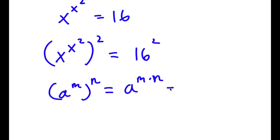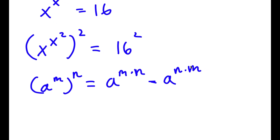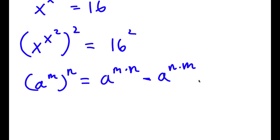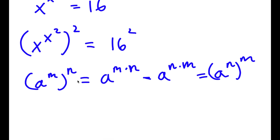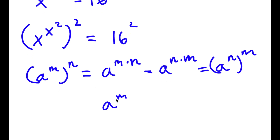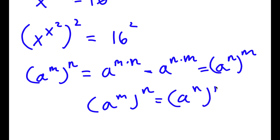And m times n these two are interchangeable, meaning I can also rewrite this as a to the power of n times m. And if we can rewrite a to the power of m times n as a to the power of m to the power of n, this means that we can rewrite a to the power of n times m as a to the power of n to the power of m. So in other words, a to the power of m to the power of n is equal to a to the power of n to the power of m.